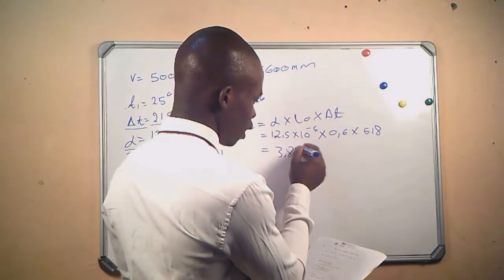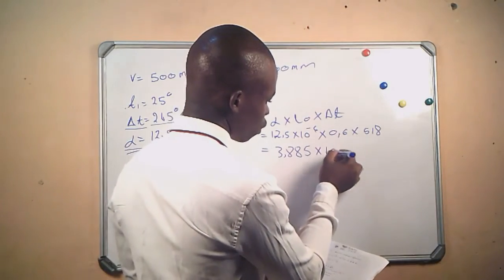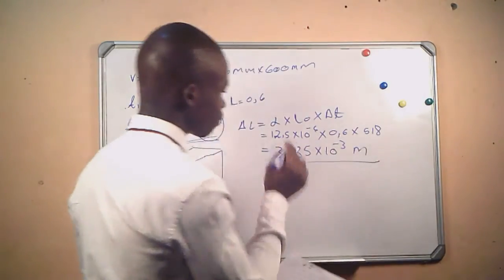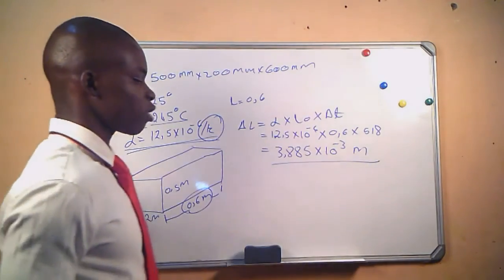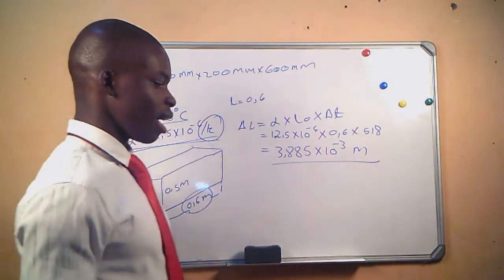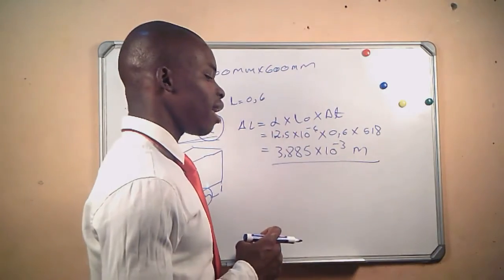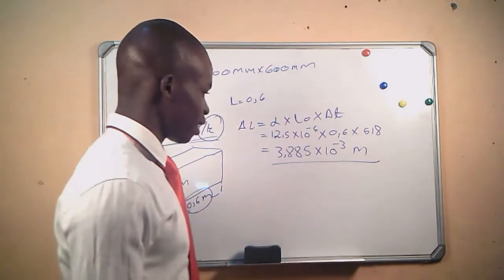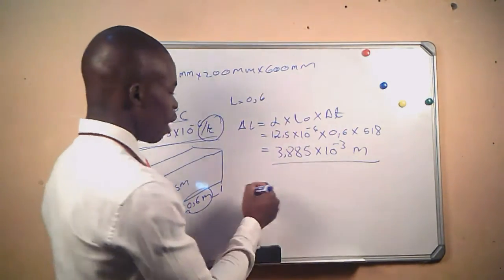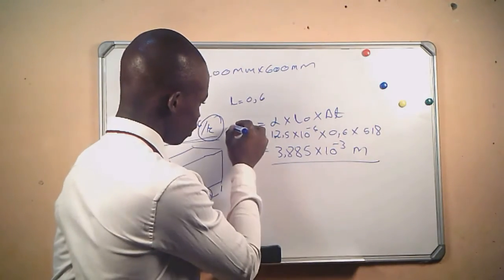This gives us an answer of 3.8885 times 10 to the power negative 3 meters. That is the first part of the question. Now we determine the increase in volume of the container.